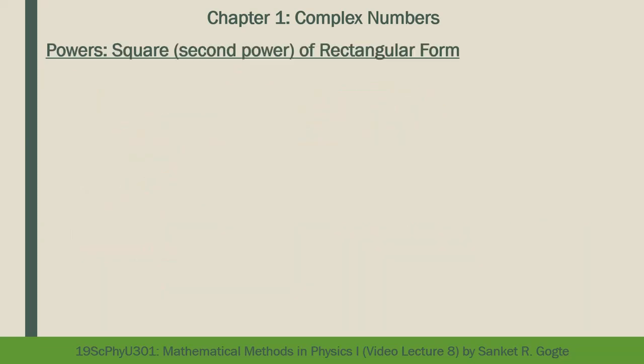Let's start with powers of complex numbers. Consider a complex number z = x + iy, where x and y can be positive or negative real numbers. Depending on their signs, the complex number lies in the first, second, third, or fourth quadrant. Let's try to find the square of this complex number, z².